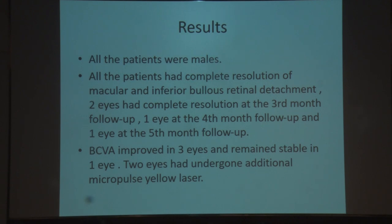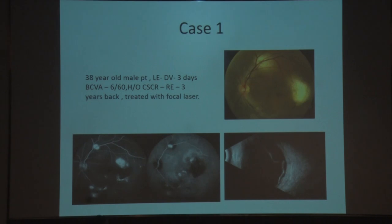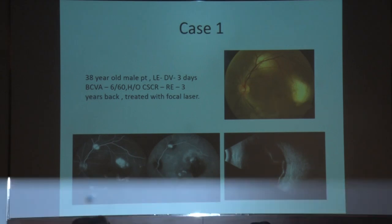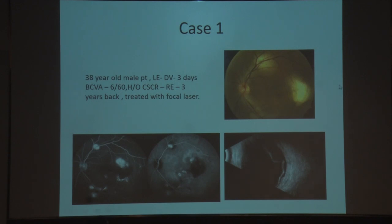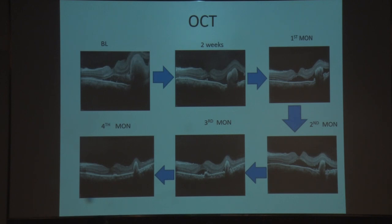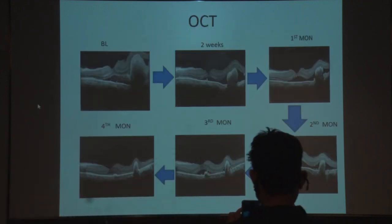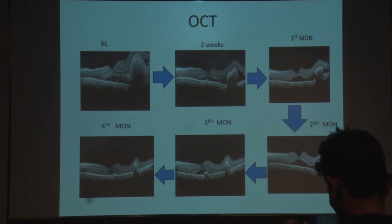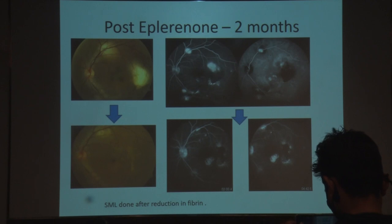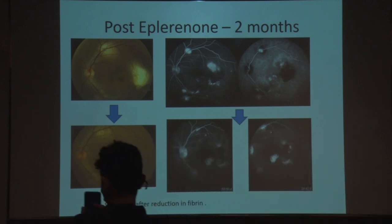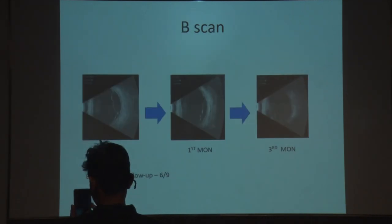Two eyes resolved at three months, one at four months, and one at five months. BCVA improved in three eyes and remained stable in one. Two eyes received additional micropulse yellow laser. Case 1: 38-year-old male, left eye defective vision of 3 days, BCVA 6/60, with dense subretinal fibrin and inferior bullous detachment with multiple leaks on FFA. Significant regression of fibrin and SRF occurred with complete resolution at four months; additional micropulse laser was added at two months when leaks reduced; vision improved to 6/9. Case 2: 48-year-old male, BCVA 6/6 partial, shallow foveal fluid with inferior bullous retinal detachment. Macular SRF resolved at one month; inferior detachment resolved at three months.